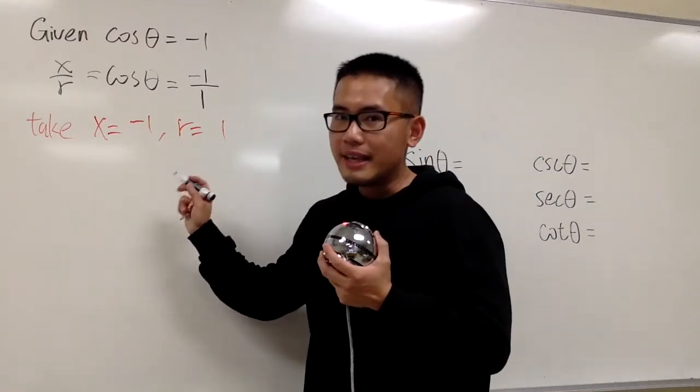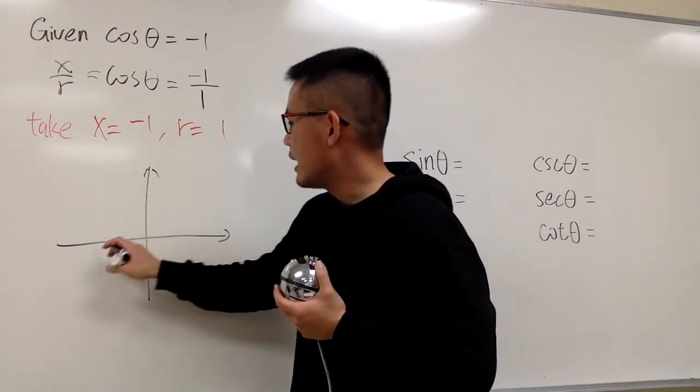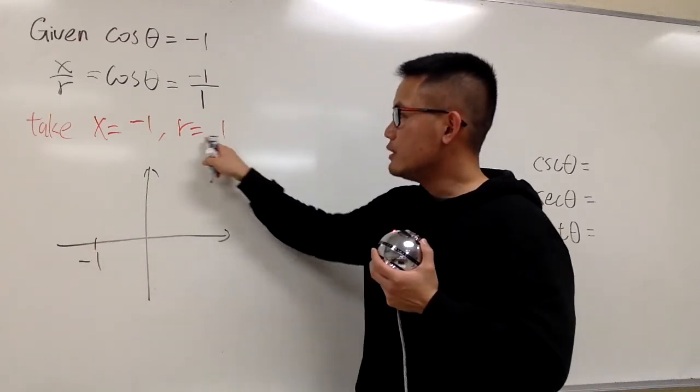So in fact, here, I can only come up with one picture, you'll see. Because right here, I know x is equal to negative 1, and if r is equal to 1,